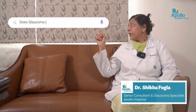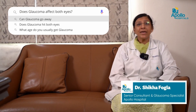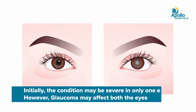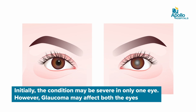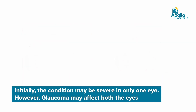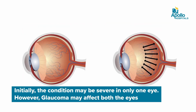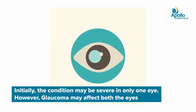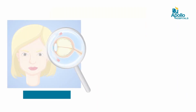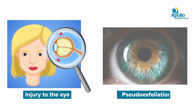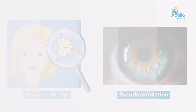Does glaucoma affect both eyes? Yes, usually glaucoma affects both eyes, even though it may be asymmetrical in presentation, meaning one eye will have more changes compared to the other. However, in some conditions it may affect only one eye, especially in cases where there is an injury to the eye or in a condition called pseudo exfoliation.